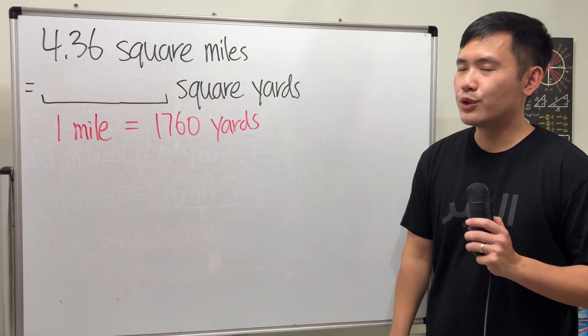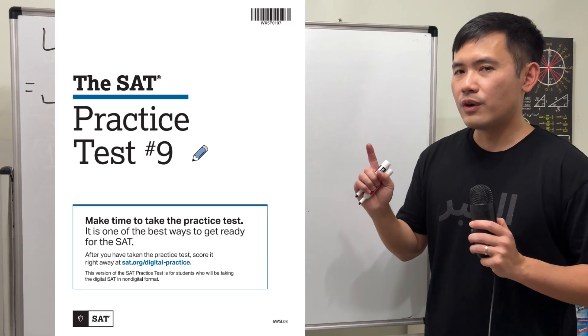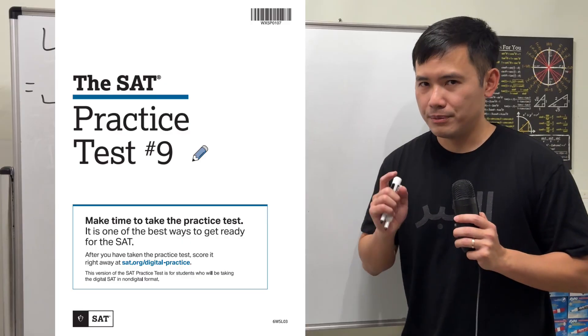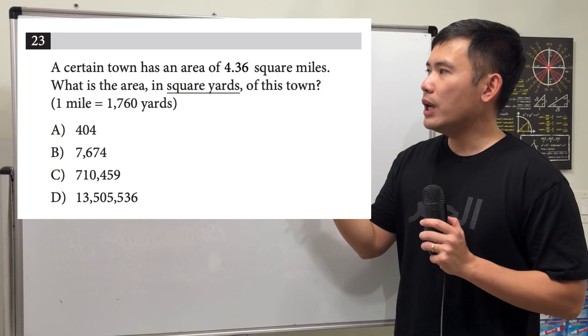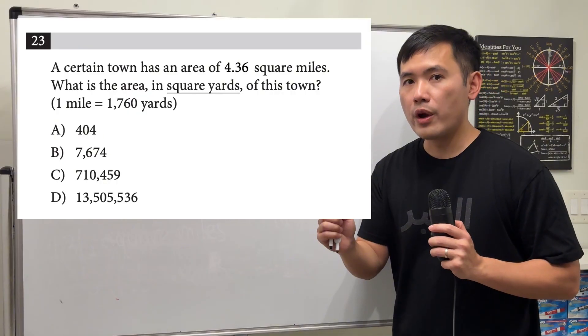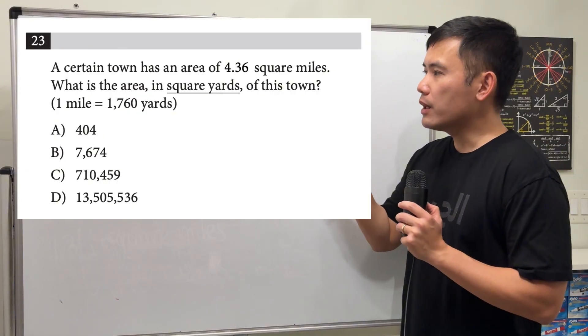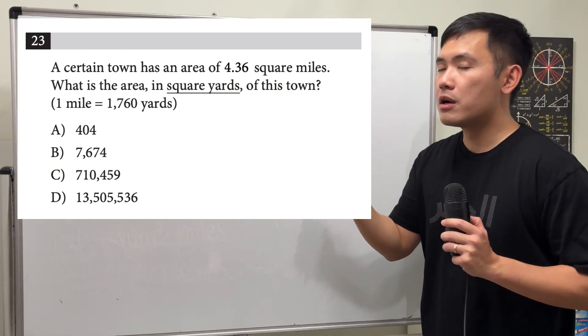Let's see if we can solve this unit conversion question together. And this one is from the official SAT practice test by the college board. We have a town and the area is 4.36 square miles. We are going to convert that into square yards.